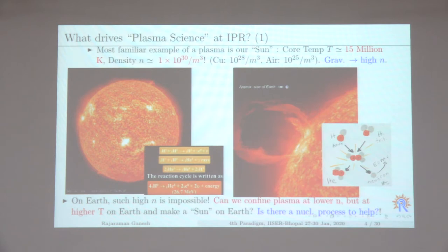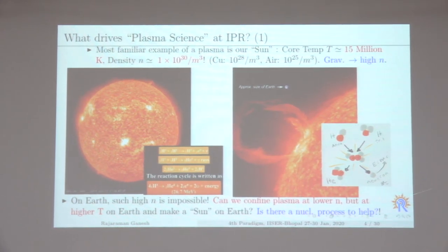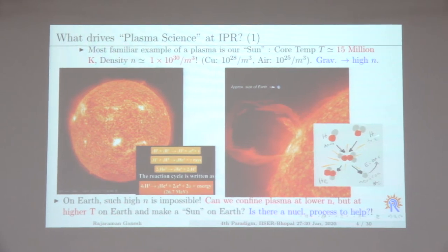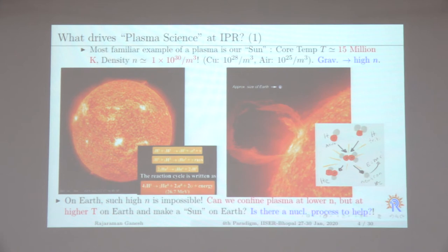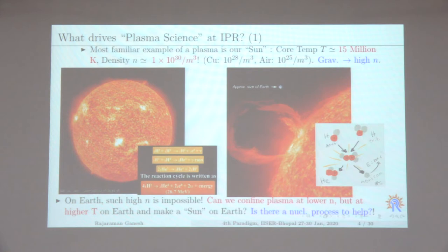Are there processes that work at higher temperature but lower densities? Yes. There is the deuterium-tritium cycle — deuterium is heavier hydrogen and tritium is even heavier — and they can fuse and produce neutrons. This process can happen at about 150 million degrees Kelvin, higher than the Sun, but at incredibly low densities.